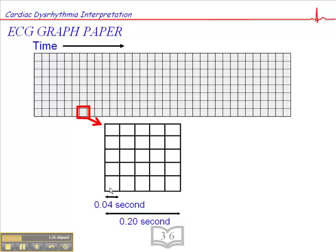And each mm in terms of time is equal to 0.04 second or 40 milliseconds. So 2 small squares, multiply that, 2 would be 0.08 second. 3 would be 0.12 second. 4 mm would be 0.16 second exactly.